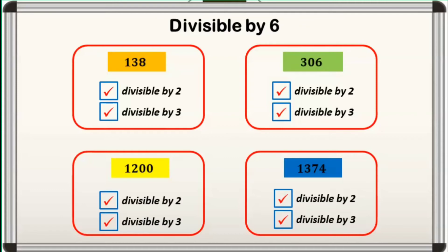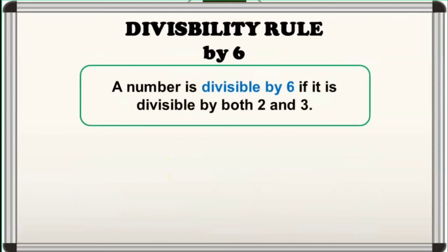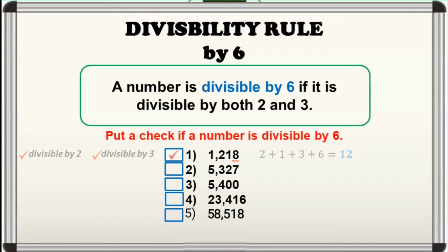So our conclusion would be: a number is divisible by 6 if it is divisible by both 2 and 3. Ibig sabihin, dapat ang number ay parehong divisible by 2 at 3 para masabi na ito ay divisible by 6. Kung hindi siya divisible by either 2 or 3, masasabi natin na hindi siya divisible by 6. For instance, put a check if a number is divisible by 6. For number 1, ang last digit ay even number which is 8, so it is divisible by 2. At ang sum ng kanyang digits ay 12, so it is also divisible by 3. Because the given number is divisible by both 2 and 3, therefore we say that 1,218 is divisible by 6.